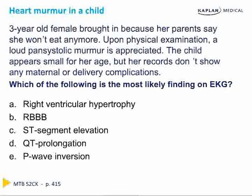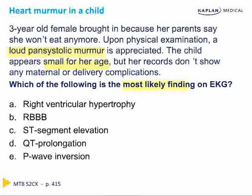Similar to step one, step two will have questions with two or three steps involved. We're not asked the diagnosis — we're asked the EKG findings for an undeclared diagnosis. The most effective approach is to pull out what's most important in the vignette. She has a loud pansystolic murmur — there aren't many causes of that. She's small for her age, and with no maternal or delivery complications, that murmur is likely related to her growth retardation. And we're asked what's most probable, not just what's possible — step two will try to trip you up by offering options that are possible but not most likely.